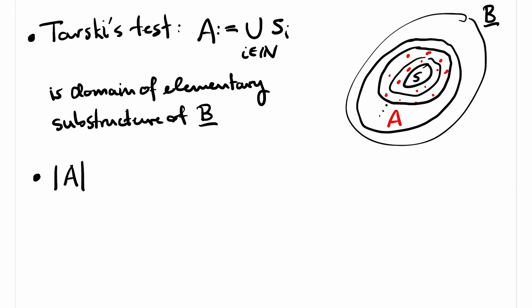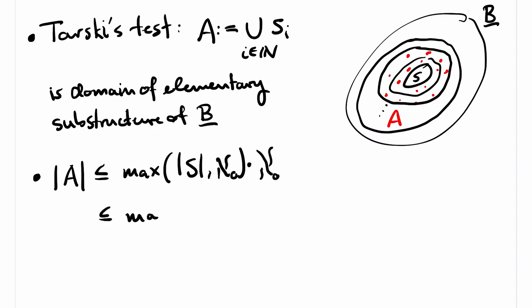The union A of all the S_i has at most the cardinality of S, unless S is finite, in which case A is countable. This is an easy calculation: each layer has size at most max(|S|, aleph_0), by induction, because the signature is countable so there are only that many formulas and we added only that many witnesses. We have countably many layers, and countable times kappa equals kappa for every cardinal kappa. The upwards Löwenheim-Skolem theorem is an easy consequence of the compactness theorem, so we will defer this to the next video about compactness.